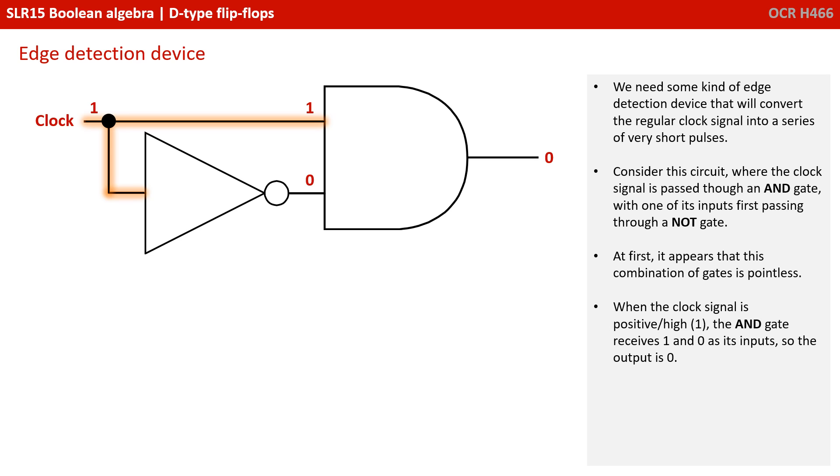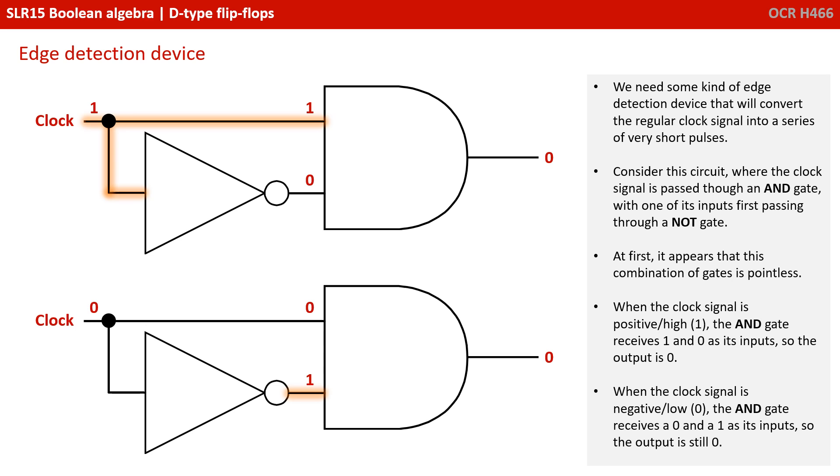Consider this circuit, where the clock signal is passed through an AND gate with one of its inputs first passing through a NOT gate. At first it appears that this combination of gates is pointless. When the clock signal is positive or high 1, the AND gate receives 1 and 0, and so outputs 0. When the clock signal is negative or low, the AND gate receives 0 and 1 as its outputs, so the output is still 0.